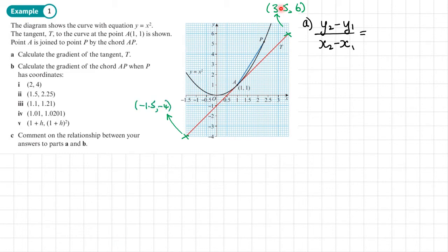This will be our y2, x2, and this will be our y1, x1. So we have 6 minus negative 4 over 3.5 minus negative 1.5.